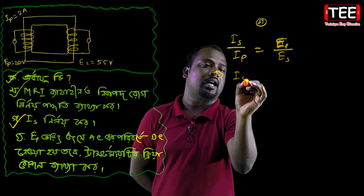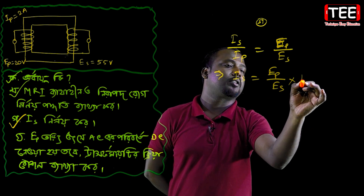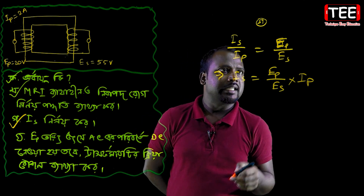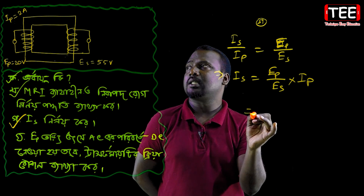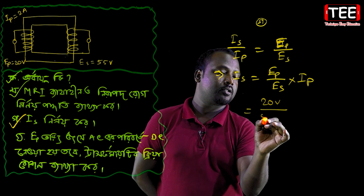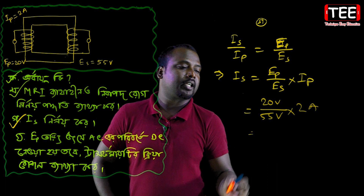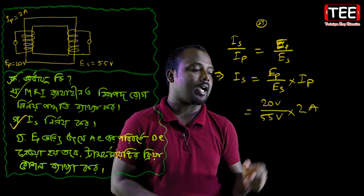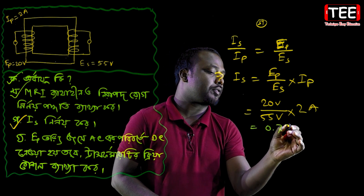From IS, the formula is: EP by ES into IP, because ES and IS are pretty certain. So EP is equal to 20V, ES is equal to 5V, and IP is equal to 20A. So we will calculate — there is an IS or IP, which is 0.73 Ampere.